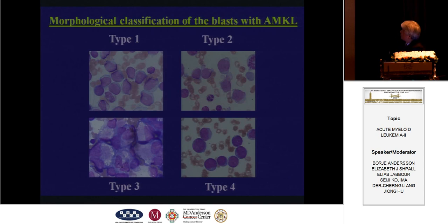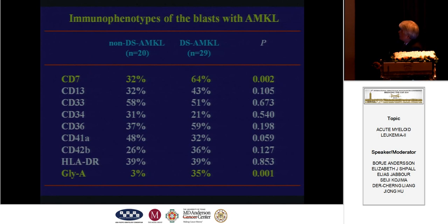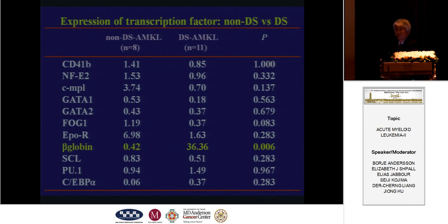We checked the immunophenotype by flow cytometry. All patients with AMKL have one of the platelet-associated antigens, such as CD36, CD41, and CD42. Also, CD7 expression and glycophorin is significantly higher in Down syndrome MKL blasts compared to non-Down MKL blasts. We also checked transcription factor expression using real-time PCR.